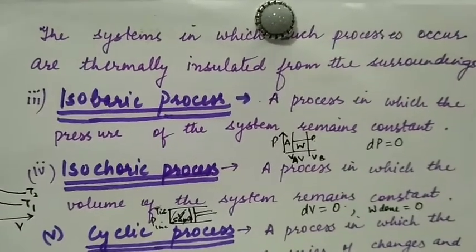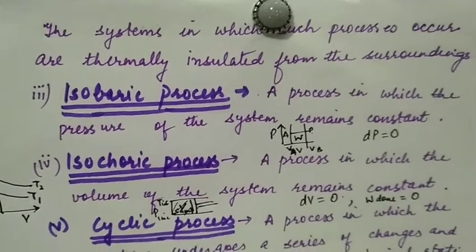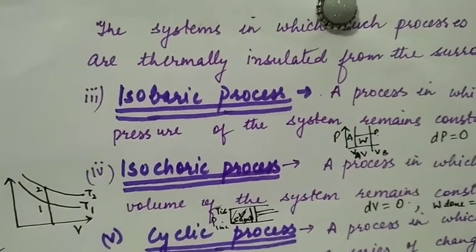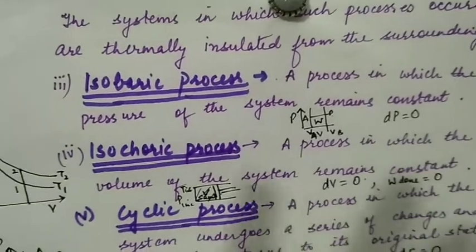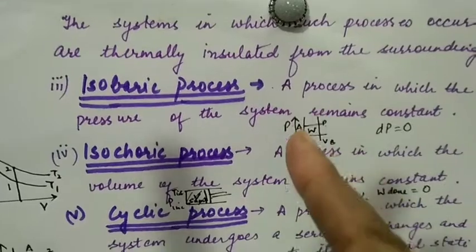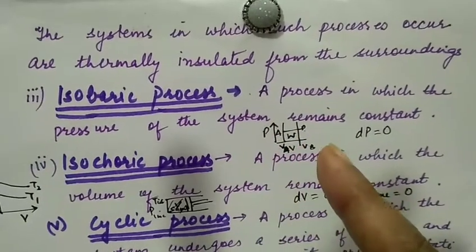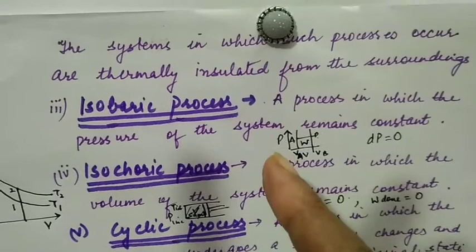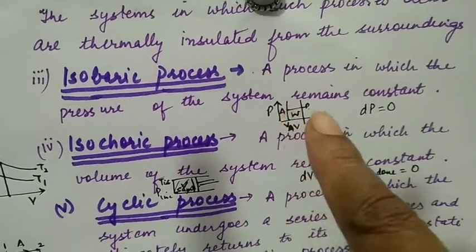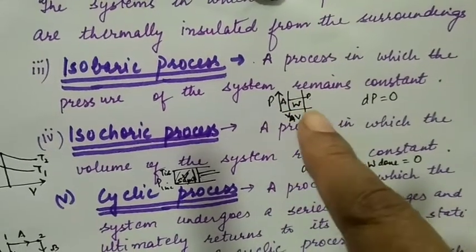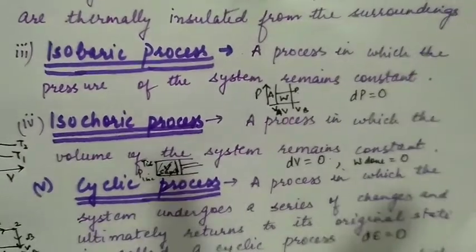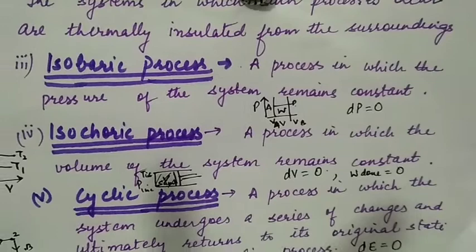Isobaric process is a process in which pressure of the system remains constant. Iso means same and baric means pressure. So we can demonstrate this in a pressure versus volume graph. In an isobaric process, when you go from VA to VB, the pressure remains parallel to x-axis - it remains the same. So in this type of process where pressure is same, dP in this type of process will be zero.